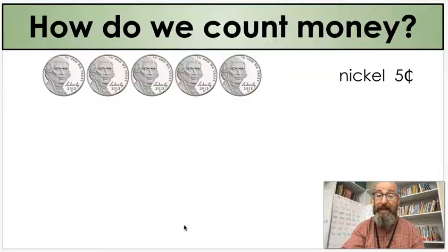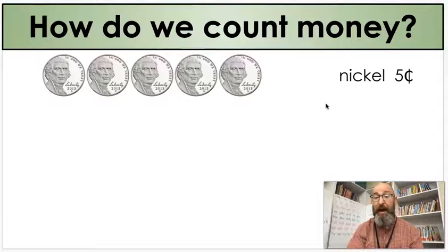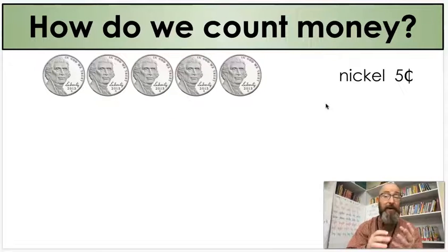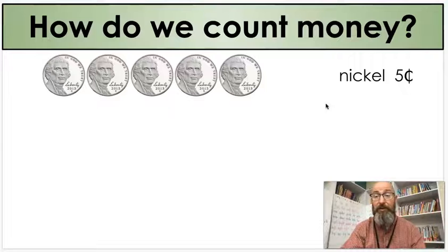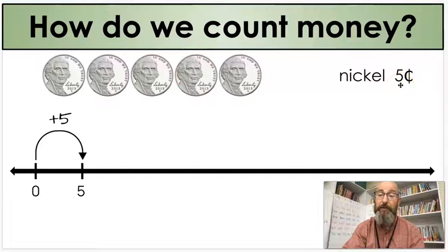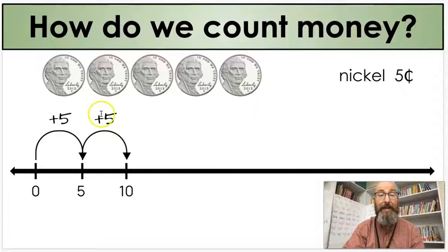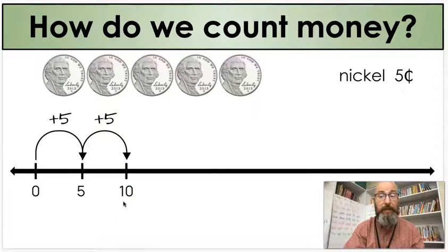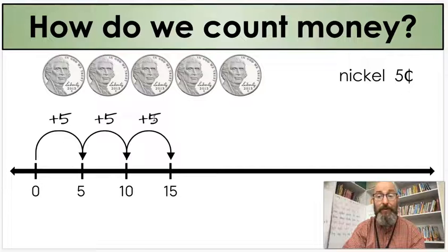Next, let's do a nickel. A nickel is worth five cents. You've probably had a teacher teach you how to count by fives: 5, 10, 15, 20, 25, 30, 35, 40, 45, 50 — and you can go on and on. That's the same as counting by nickels, because nickels are worth five. Each time we add a nickel, we add five. First nickel: add five, now I have five cents. Second nickel: add five again, now I have ten cents. Yes, that's a dime — but we're going to keep moving. So two nickels is worth a dime. Third nickel: add five again, now I have fifteen cents. Can you see our counting by fives? Five, ten, fifteen.